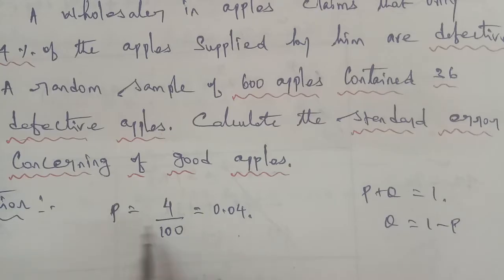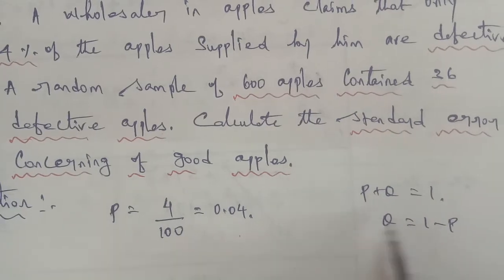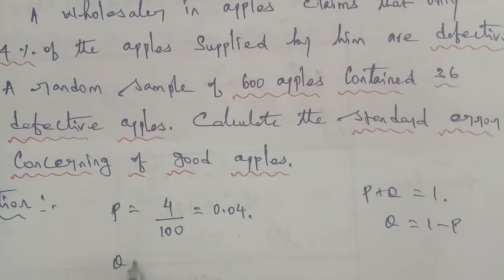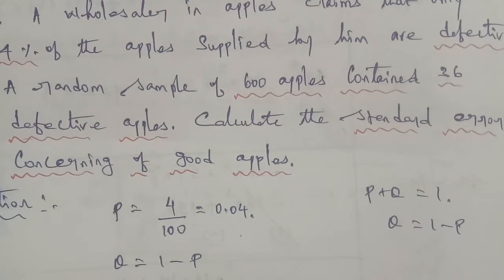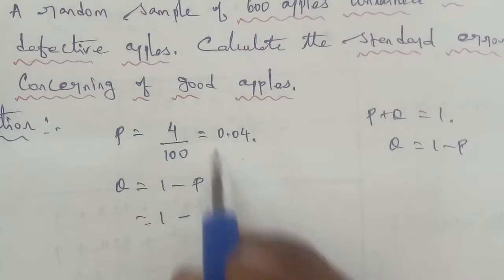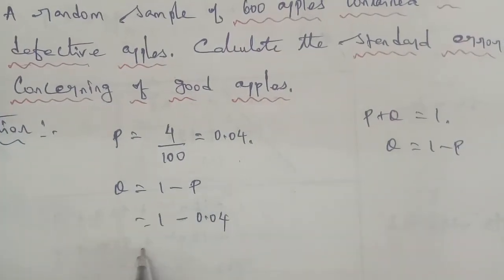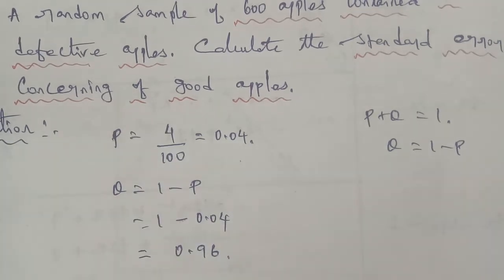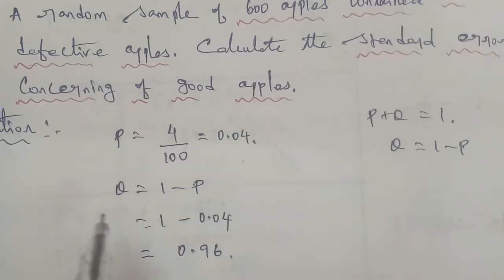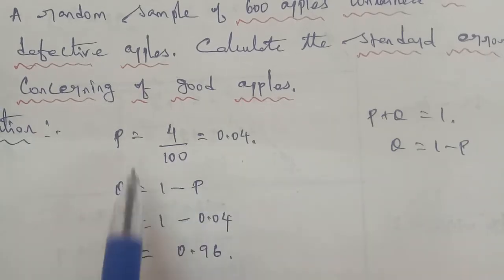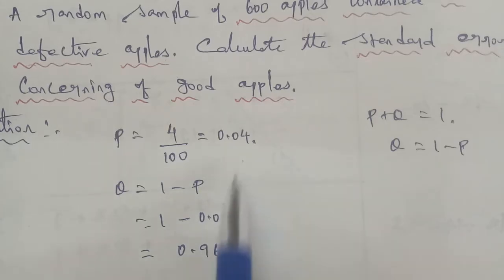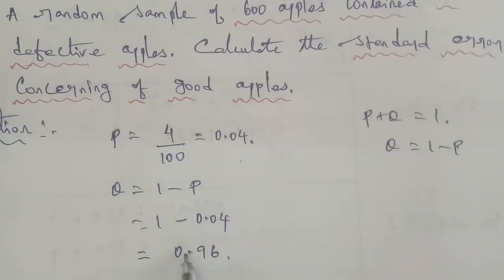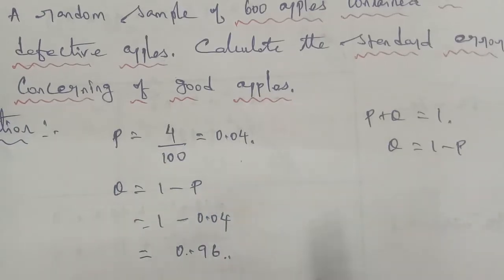Since defective appeals P is 0.04, Q is equal to 1 minus 0.04, which gives us 0.96. So P is equal to 0.04 and Q is equal to 0.96, where P represents defective appeals and Q represents non-defective appeals. We can verify: P plus Q equals 0.96 plus 0.04, which equals 1.